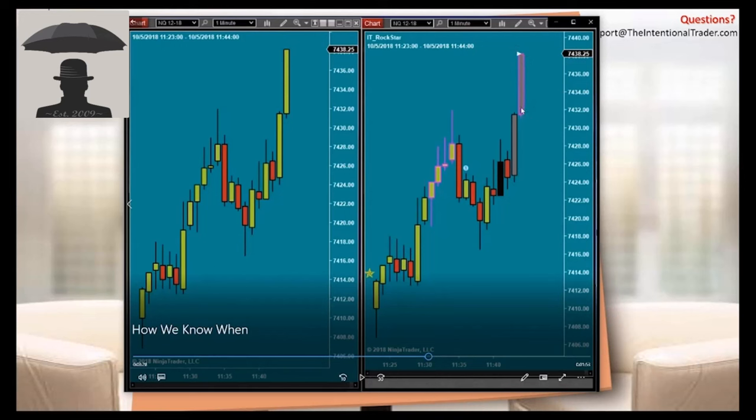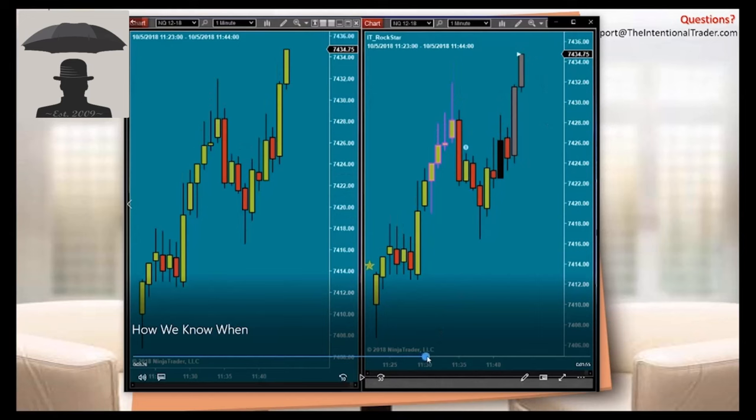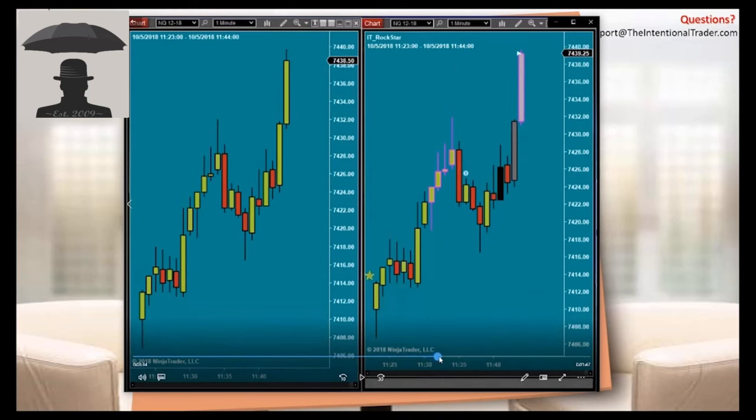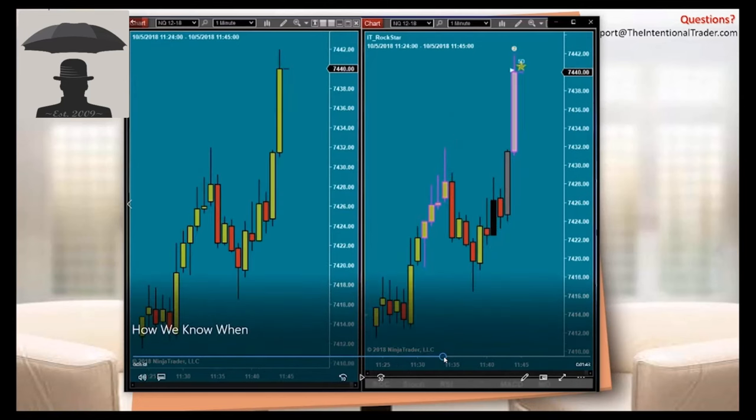Now we've gotten into an overbought condition. That's this pink outline. Notice these are real-time conditions. We're reading every single tick that comes into each bar. You notice the indicator prints on the tick that the condition exists on that bar. This is what I meant by real-time notification of market conditions.